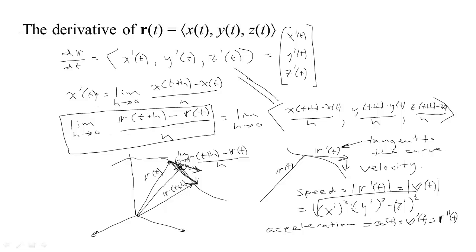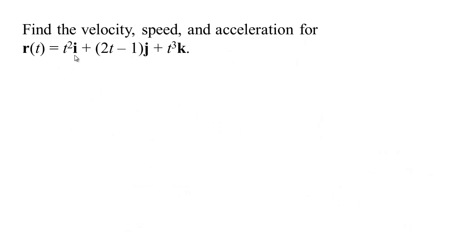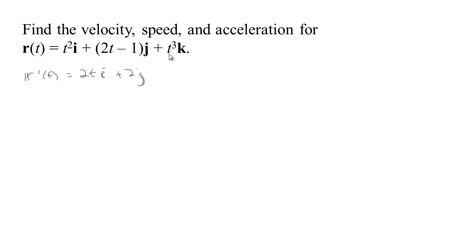Let's look at a couple of examples. We have this vector-valued function R. If we want to find the velocity, that would be R prime of T, which gives a vector tangent to the curve that R sweeps out. That's just the derivative of the first component with respect to T. The derivative of 2T minus 1 is 2, so we get 2 times the unit vector I. And the derivative of T cubed is 3T squared times the vector K. That's our velocity R prime.